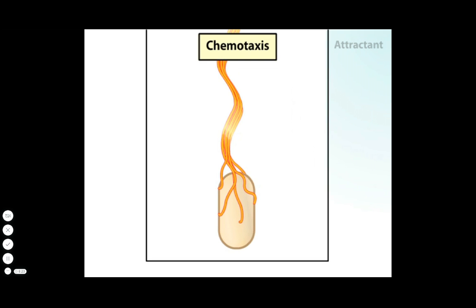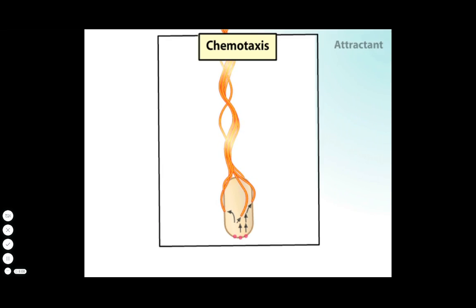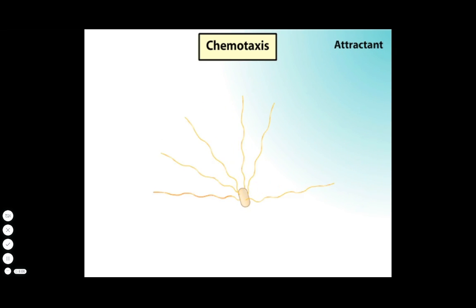When the cell moves away from an attractant, that is, down the concentration gradient of the attractant, the receptors send signals that trigger one or more flagella to rotate clockwise. The bundle flies apart, causing the cell to tumble and then swim in a new, random direction.